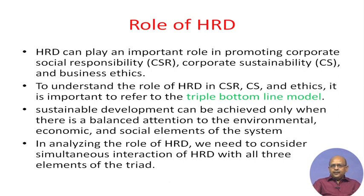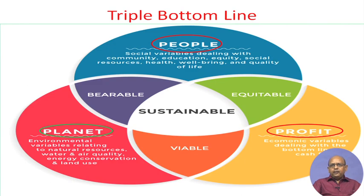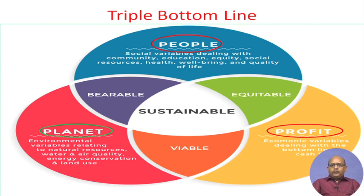All the three elements of the triad — that is CSR, CS, and ethics — and what role it has. This is what basically the triple bottom line is: people, profit, and planet. Profit is an economic variable, and planet is a variable related to the environment — that is how you are going to exploit natural resources, and whether you are going to help in improving water quality, air quality, energy conservation, land, and all kinds of things related to the environment. Similarly, if you look at the people factors, it is a social variable in terms of equity, society, health, well-being, and quality of life. So, whether as an organization you are going to contribute, in addition to your economic variable or profit or productivity, to the growth and development of the people and planet both, so that it leads to sustainable development of the world.